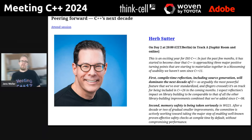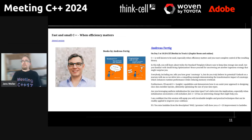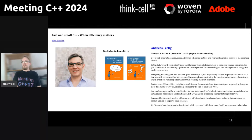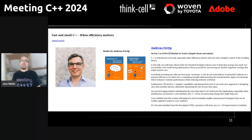I also decided to make it a top 11 because the keynotes don't really count — they're always popular. Then, one of the folks who made it into the main track but not at the top of the voting results is also here, directly after Herb: Andreas Fertig with 'Fast and Small C++ — When Efficiency Matters.'